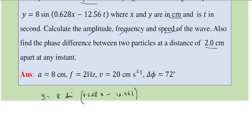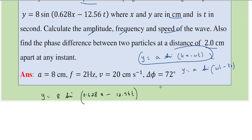Comparing with the standard form y = A sine(kx - ωt) — this form is also acceptable, as is y = A sine(ωt - kx) — both are valid forms of the wave equation. Comparing, we can say that amplitude A = 8 centimeters, since the question states x and y are in centimeters.